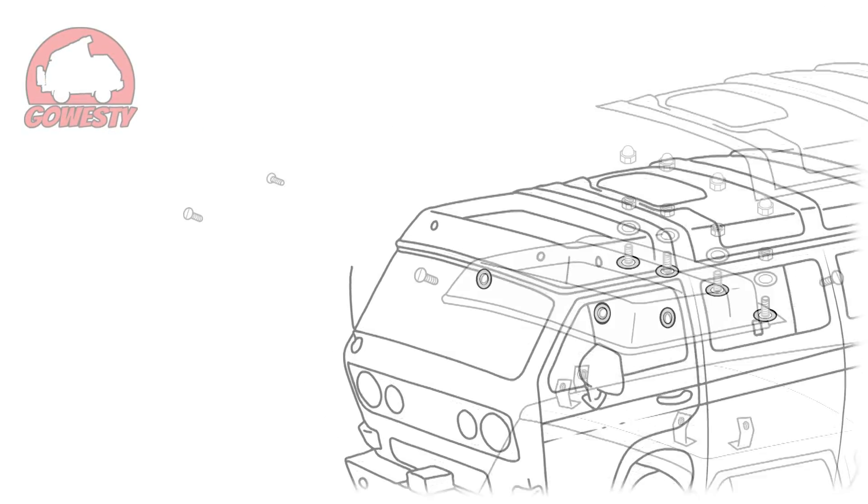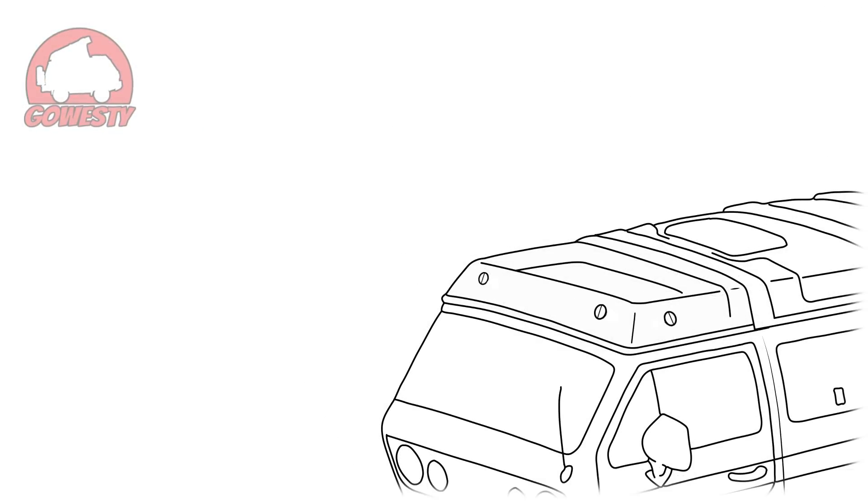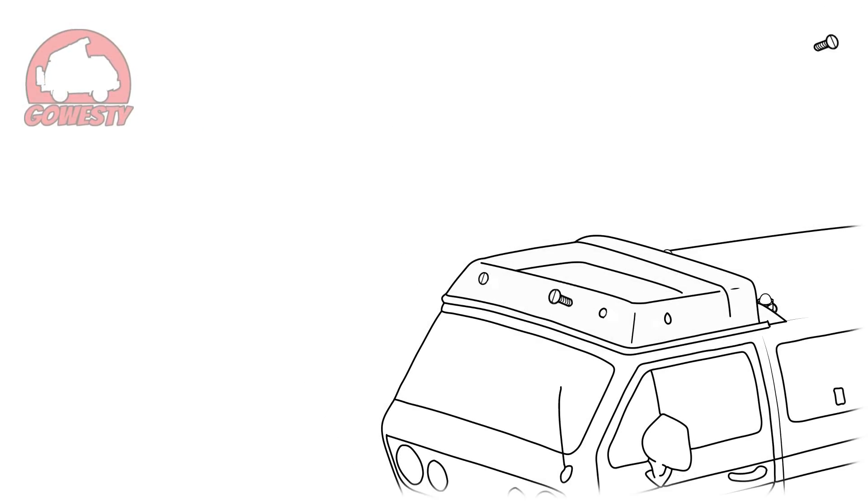You'll need to remove the luggage rack from the van. First raise the camper top and remove the four flathead screws on the front and sides. Next move to the back side and remove the four caps from the nuts along the back of the rack. Remove the nuts and then remove the rack from the van.